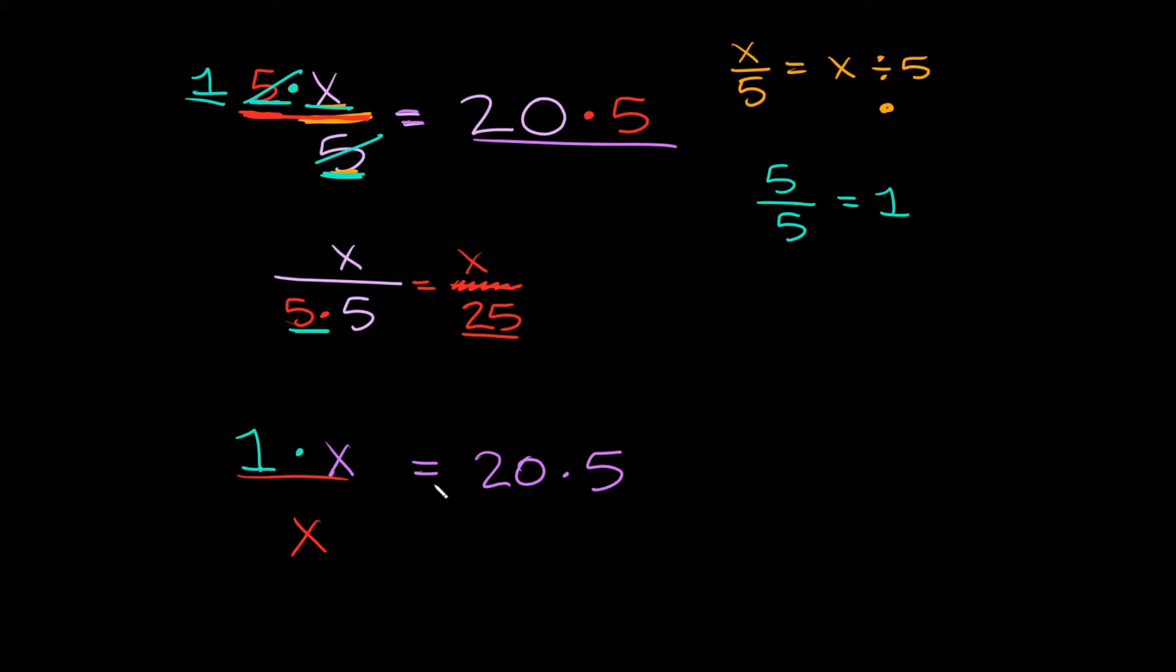What's 1 times x? That's just x. And that's equal to 20 times 5. What is 20 times 5? 100. So your final answer here would be x is equal to 100. Alright let's try a couple more.